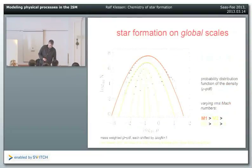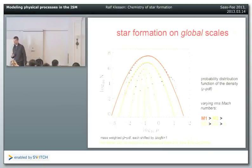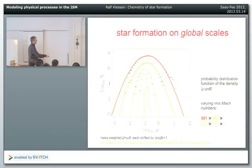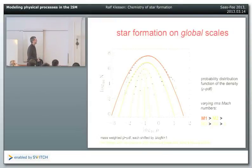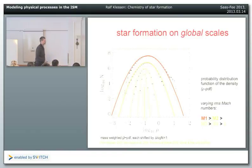This is the logarithm of the density - a density PDF. The width of that distribution depends on the Mach number: very large Mach number gives a wide distribution, very small Mach number gives a homogeneous density distribution.